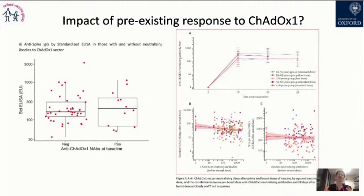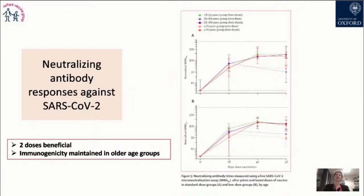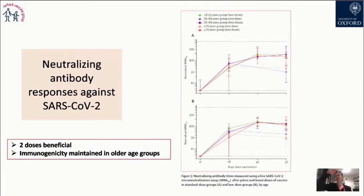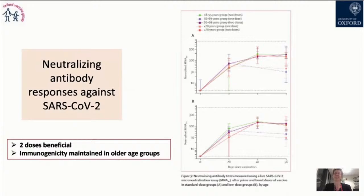Very importantly, the neutralizing antibody response against SARS-CoV-2 — measured by the capacity of antibodies to block the virus entering cells — shows data from older populations overlapping the green line for healthy adults aged 18 to 55. Again, the correlate of protection is maintained in older age groups. This is particularly significant given that COVID-19 has the highest death rate in elderly populations.